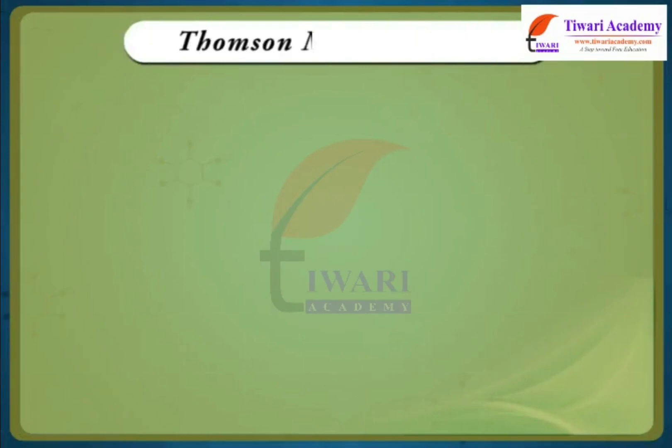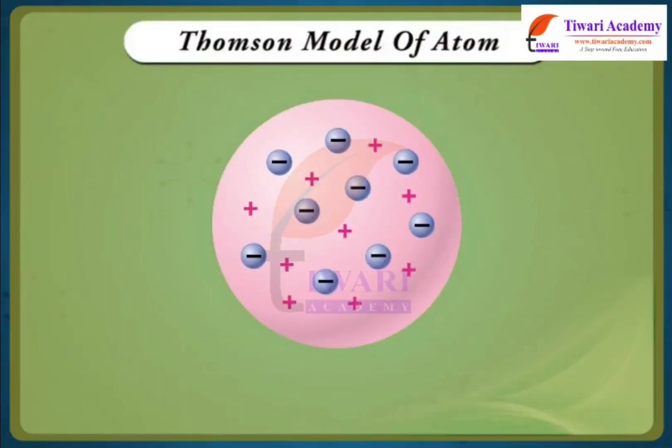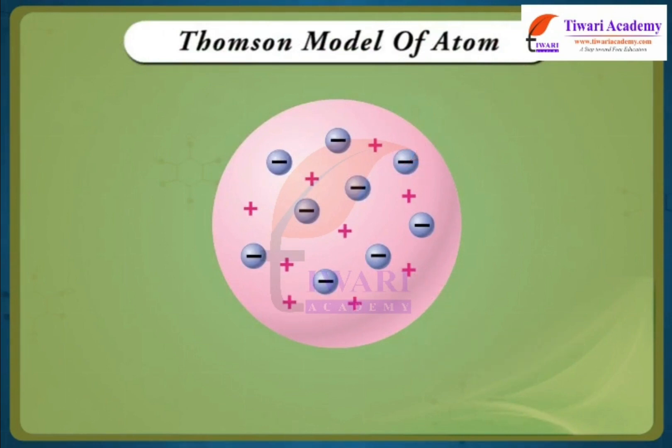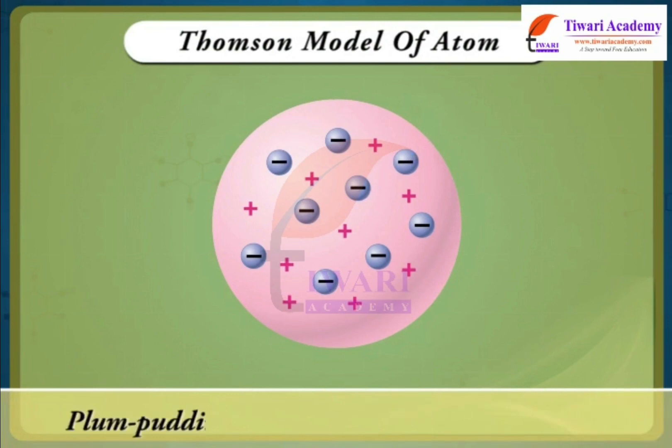Thomson Model of Atom. He proposed that an atom consists of a uniform sphere of positive electricity in which the electrons are distributed more or less uniformly. This model of atom is known as the plum pudding model or raisin pudding model.